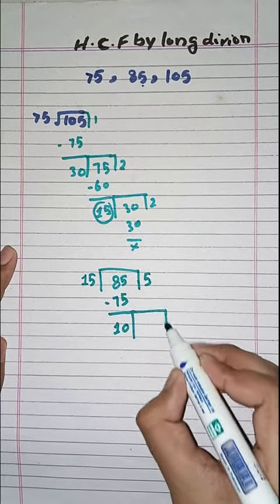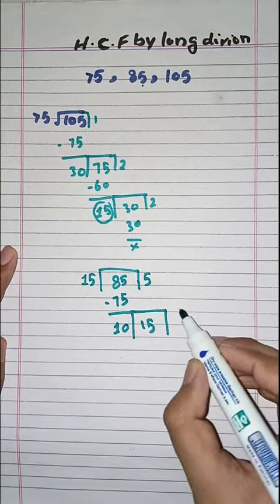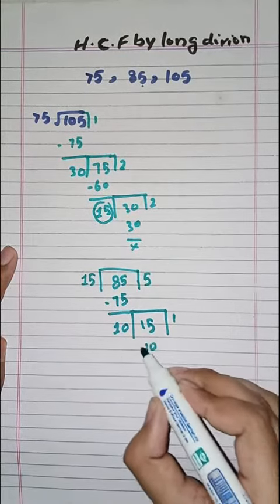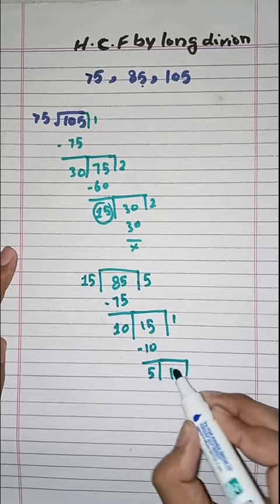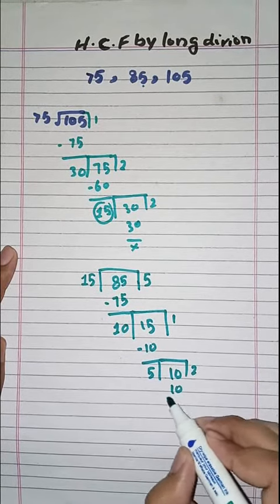Now we will divide 15. 10 ones are 10. Minus, what would be 0? So we are completely solved.